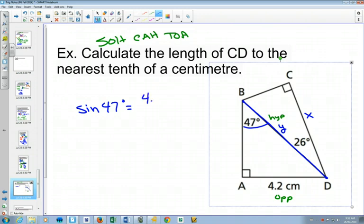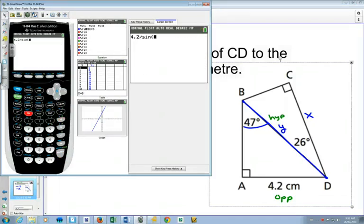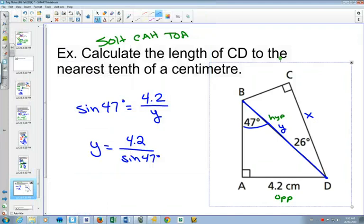All right. Opposite side 4.2, hypotenuse Y. You'll need to multiply both sides by Y and then divide both sides by sine 47. Doing that all in one step. Take out our calculator. 4.2 divided by sine 47, 5.74. So Y is equal to 5.74.